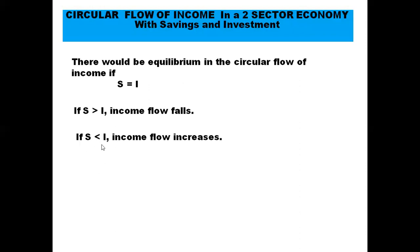If savings is less than investment — that is, investment is greater than saving — income flow increases. The excess of investment over saving means whatever income leaks out from the circular flow in the form of savings is more than neutralized by an injection in the form of investment. For example, if savings is 200 rupees but investors invest more than 200 rupees using surplus savings, the income flow will increase, pushing up the level of income in the economy.